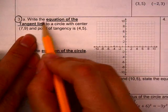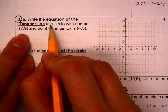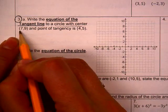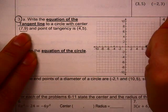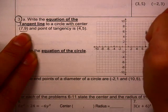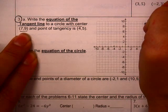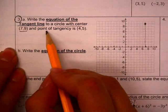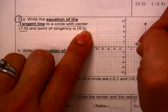Okay, for this one here, we're looking at a circle with a center of 7, 9, so we'll go over 7 and up 9, and it has a point of tangency of 4, 5.